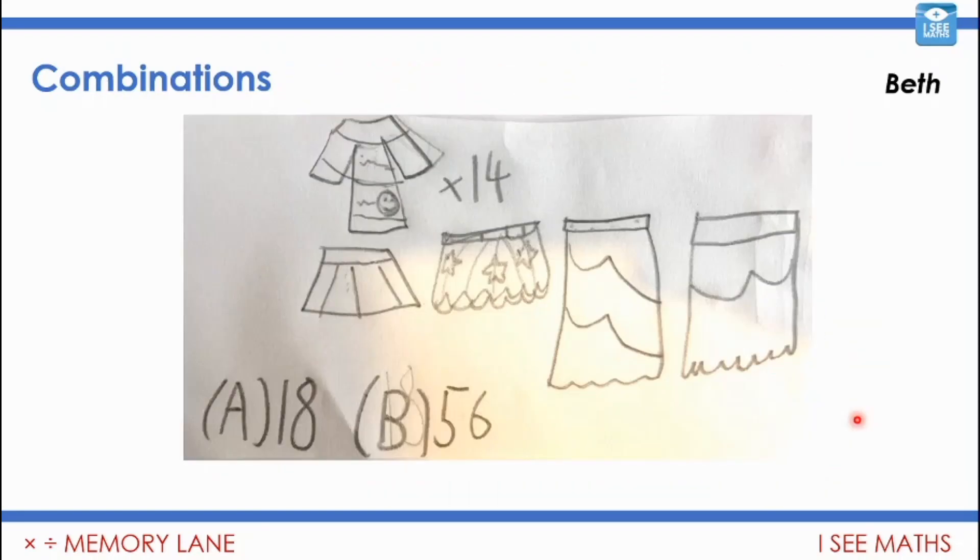Have a look at this example from Beth. She went for 14 tops and four skirts. Is that 18 different outfits that can be worn, or is it 56? One of them is the right answer and one is the common mistake. Tell the screen which one's the right answer and which is the common mistake. Pause the video if you need more time.